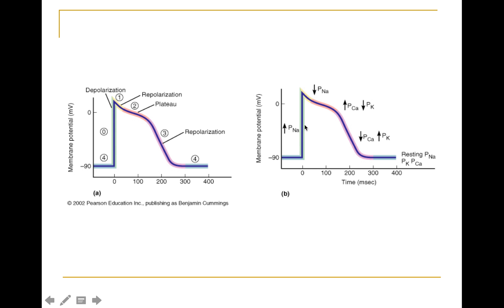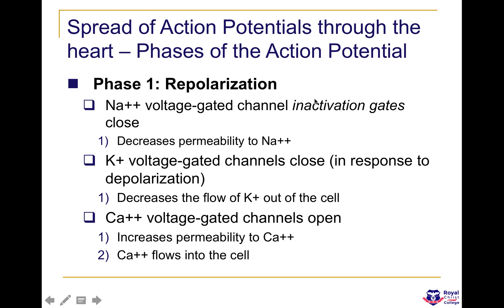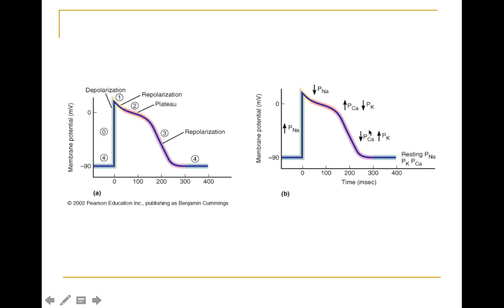On the diagram, phase zero shows the resting potential starting at minus 90 shooting up just above zero, indicating an influx of sodium ions through open sodium voltage-gated channels. In phase one, the sodium voltage-gated channels close, decreasing sodium influx, so the charge starts to decrease. Potassium channels remain closed while calcium voltage-gated channels start to open, which is why the potential declines slowly rather than rapidly.